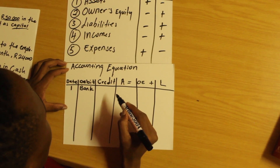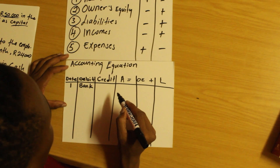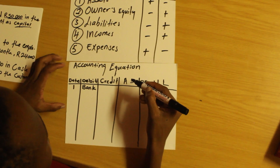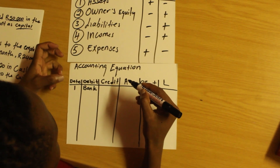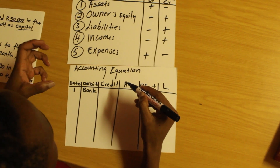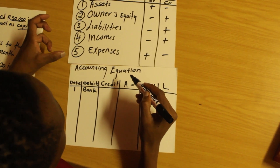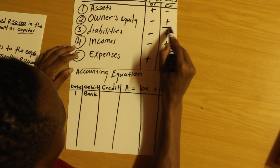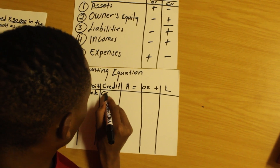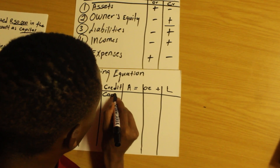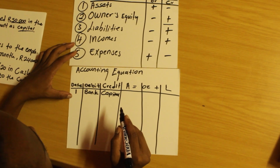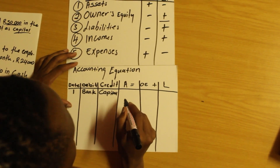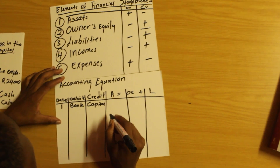I'm going to credit capital. Capital is an owner's equity account and it's increasing — the owner's investment into the business is increasing, that's why it's called capital. It was contributed by the owner, that's why it's an owner's equity account. Owner's equity increases on the credit side, so I will credit capital.